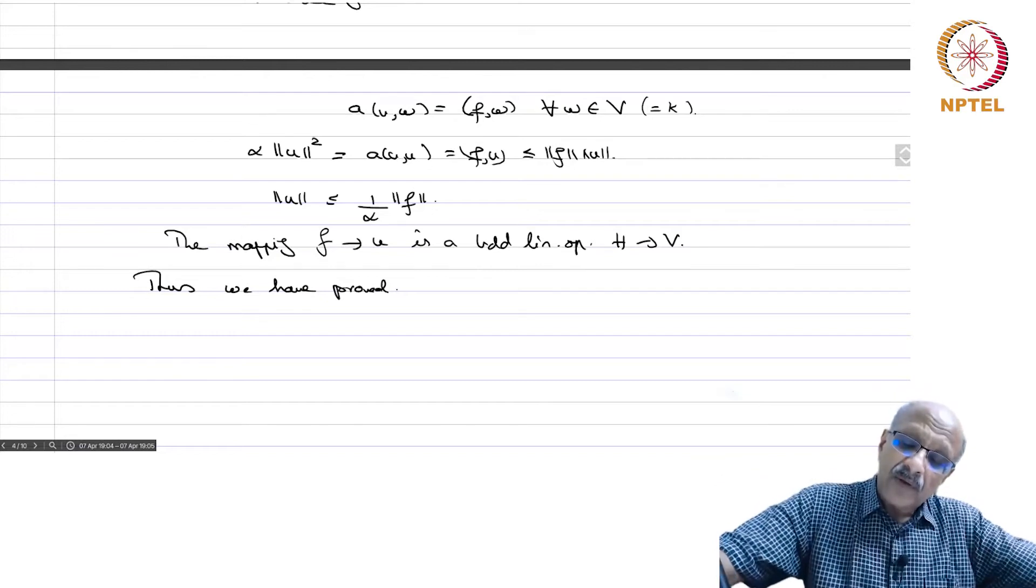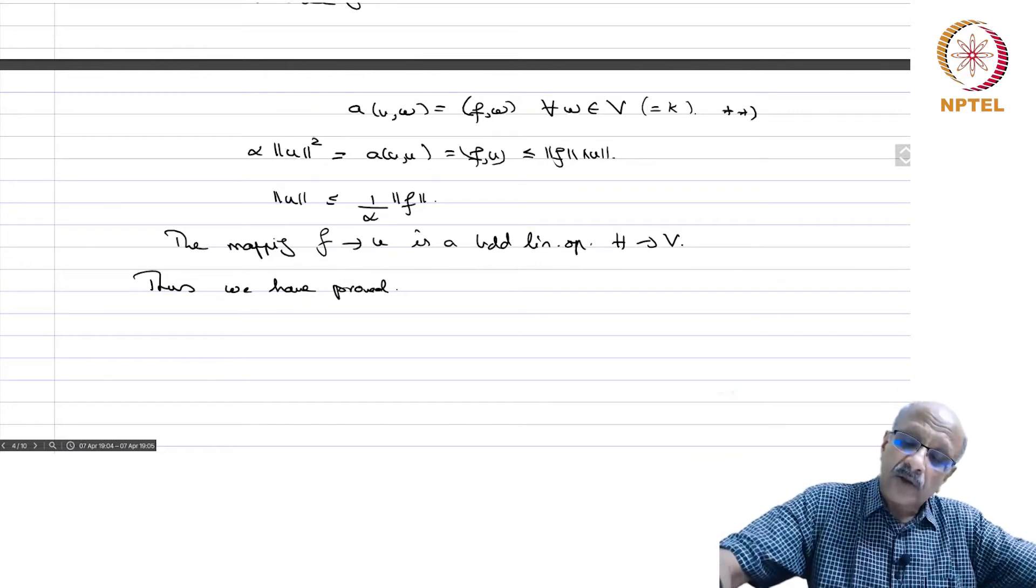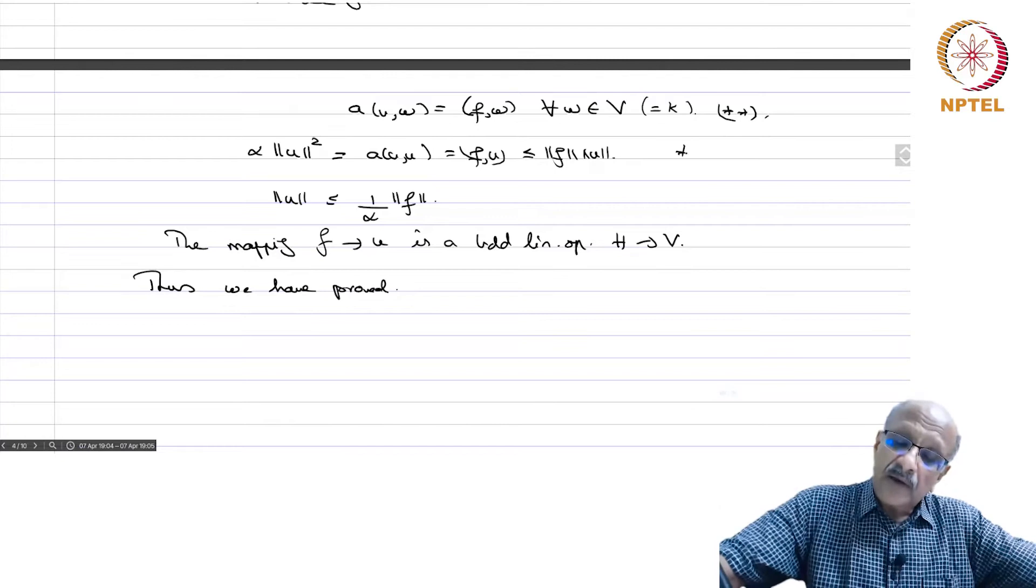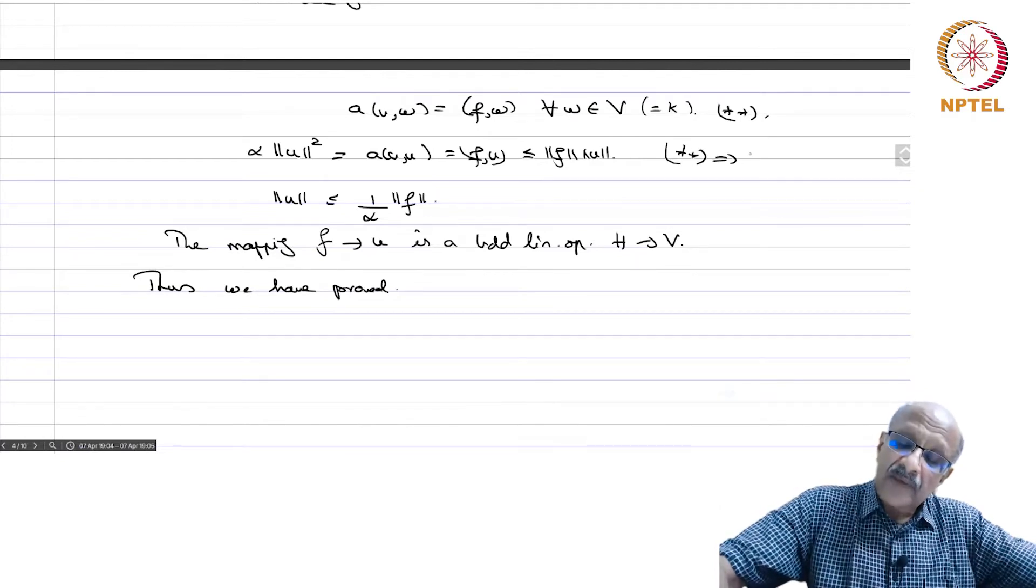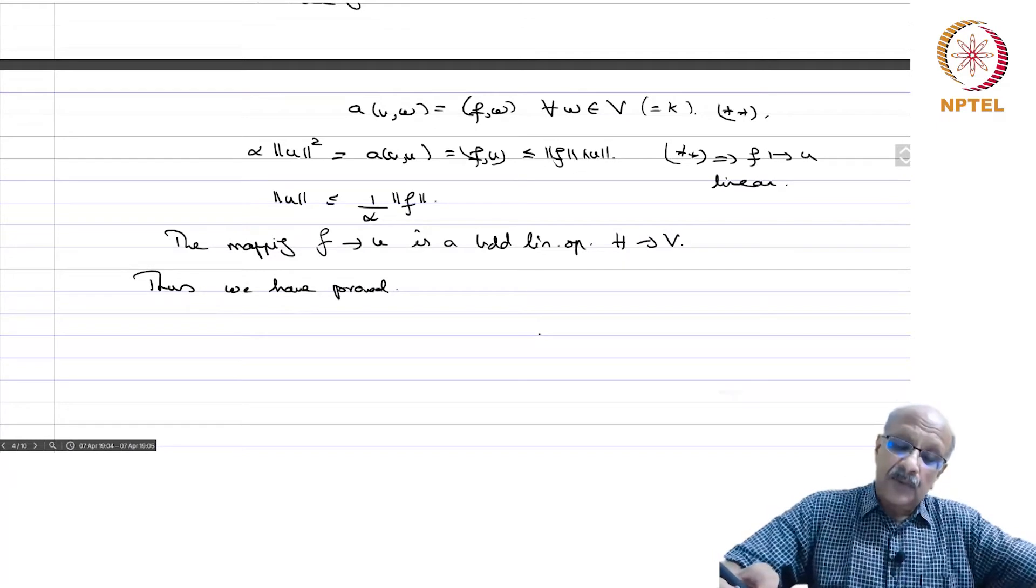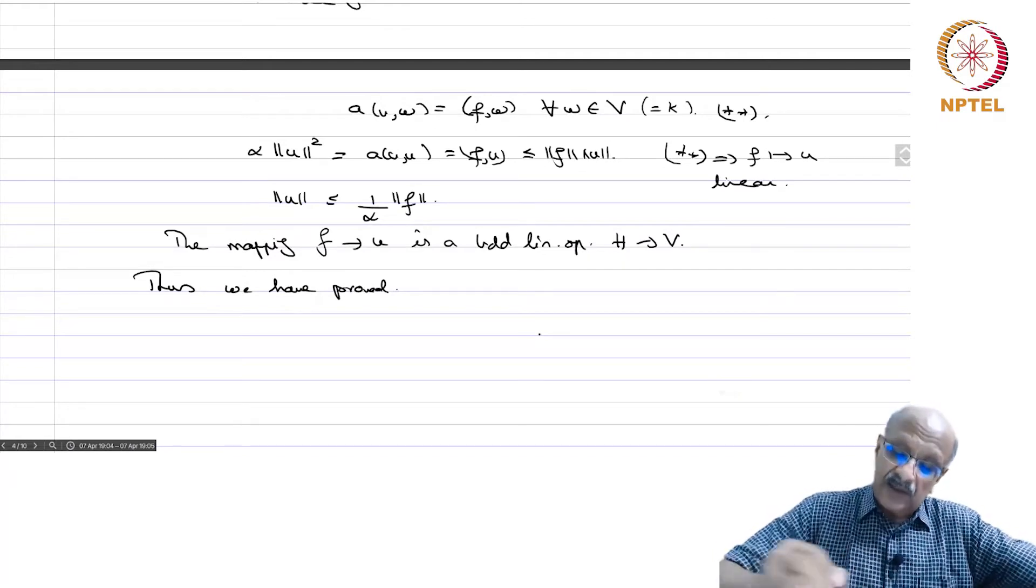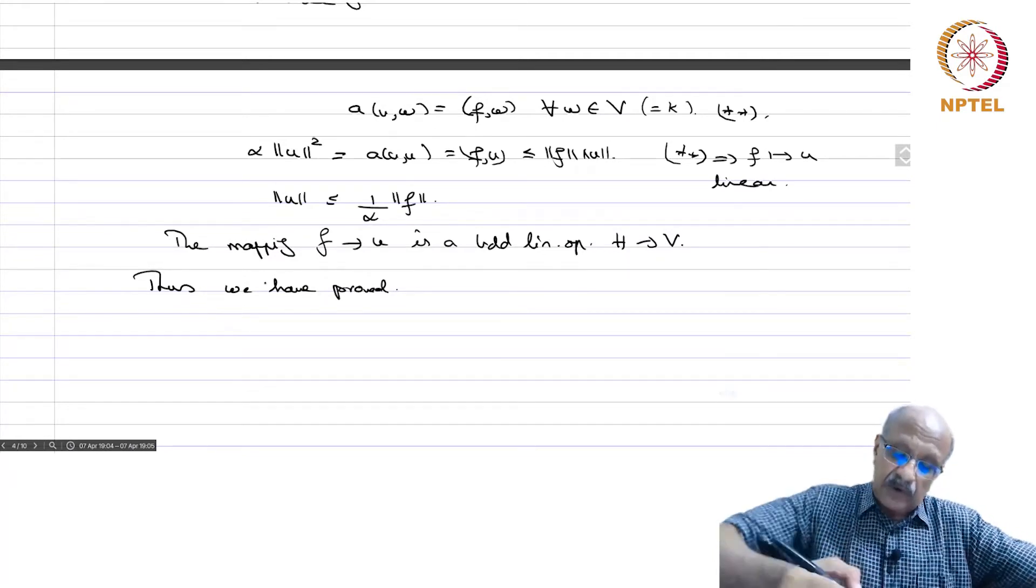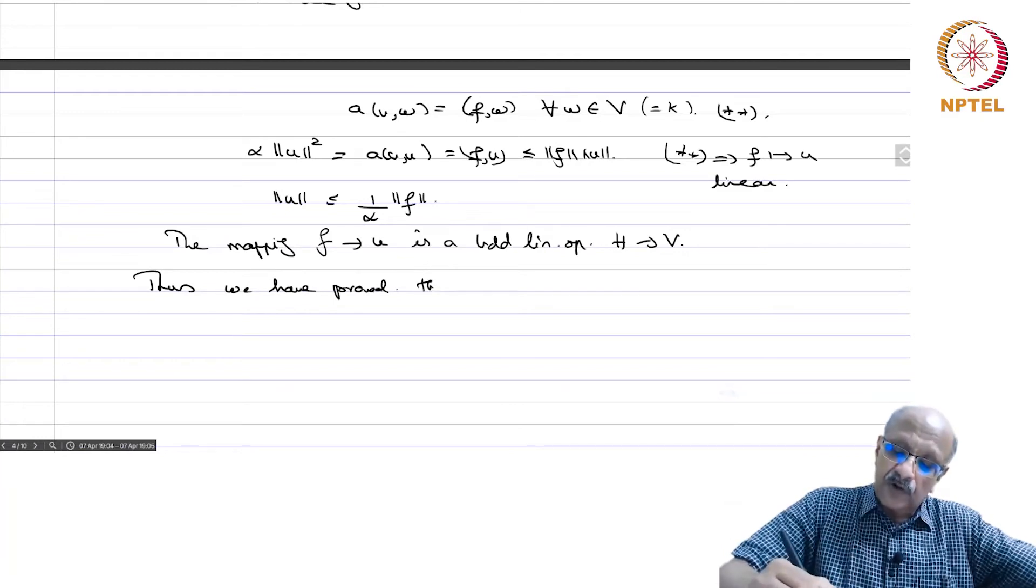This implies, let us call this double star. Double star implies that F going to u is linear, because of the bilinearity of A and the inner product. This implies that this is a bounded linear operator. Thus we have proved the following theorem, the Lax-Milgram Lemma.